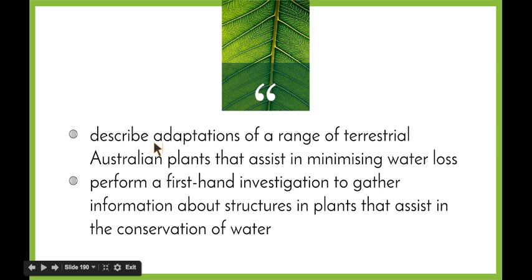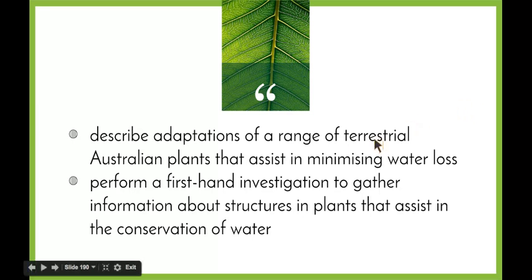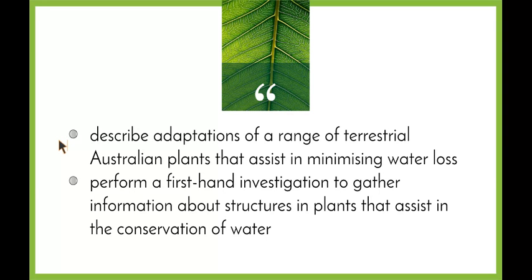We've already looked at adaptations a few times, most recently when we were looking at the mangroves. We have our three types of adaptations: behavioural, structural, and physiological. In particular, we need to look at terrestrial Australian plants. The syllabus specifically requires Australian organisms, so we need to make sure we have Australian examples to refer to. This dot point focuses on how plants can minimise water loss.